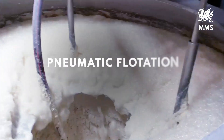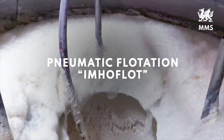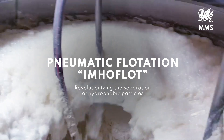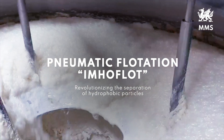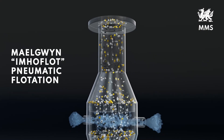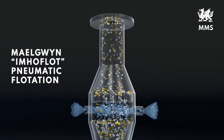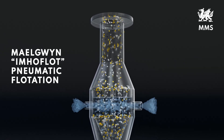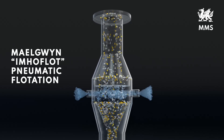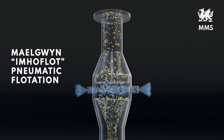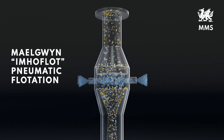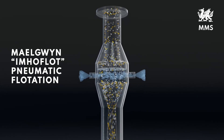The Mylguin-Imhoflot pneumatic flotation is part of modern reactor separator technology. Air bubble formation and particle accumulation take place in the reactor. The mineral-laden bubbles are recovered in the downstream separator. This splitting of the two tasks enables an optimization of the individual design.